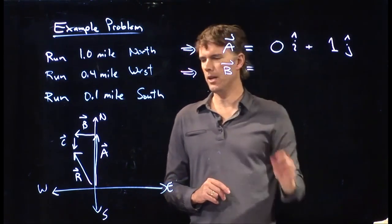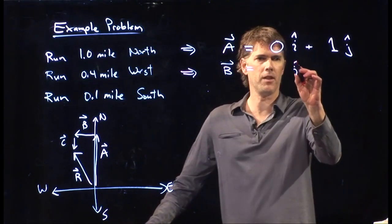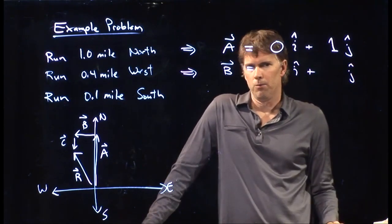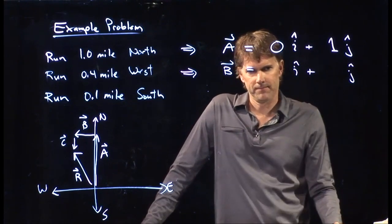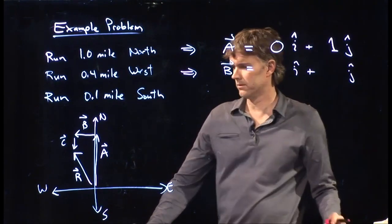The second vector, b, is going to be what? Well, we've got something in front of the i hat. We have something in front of the j hat. What do you think? I'm thinking it's part of where did the 0 come from. Okay. Good question.